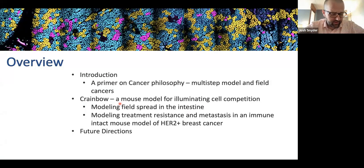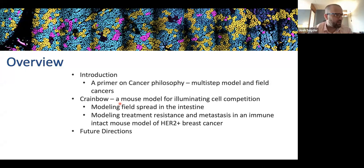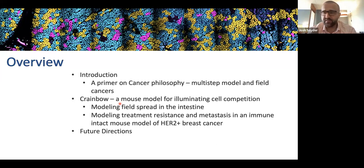The overview of my talk — I'll try to keep it as broad as possible since there may be many different disciplines here today — is to give an introduction on cancer philosophy: what is the multi-step model, what is a field cancer, what is this field of epithelial cells that may have mutant and precancerous characteristics? Then I'll shift gears into the use of our Cancer Rainbow technology, how we can light up oncogenes within an epithelium and trace cell types spreading within that epithelium and eventually becoming a metastatic cancer. I'll focus on two models — briefly the intestine, then HER2 — and leave you with future directions.